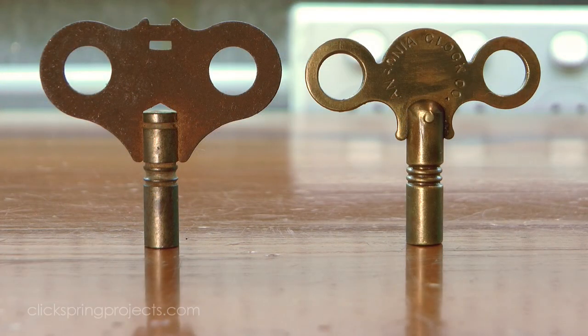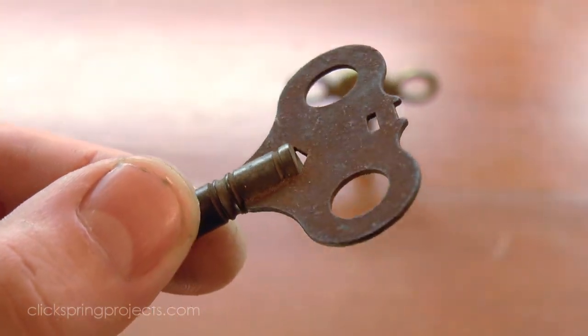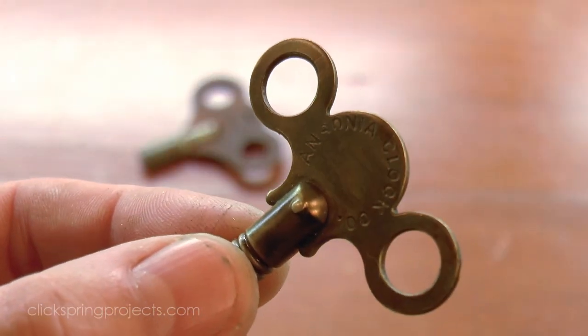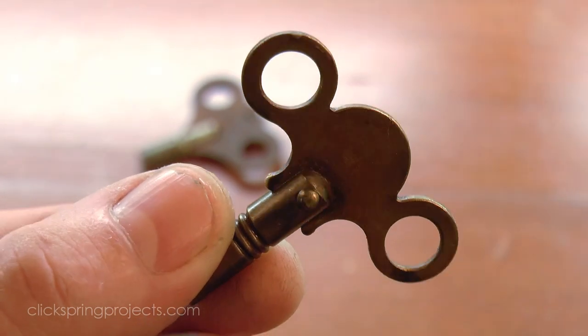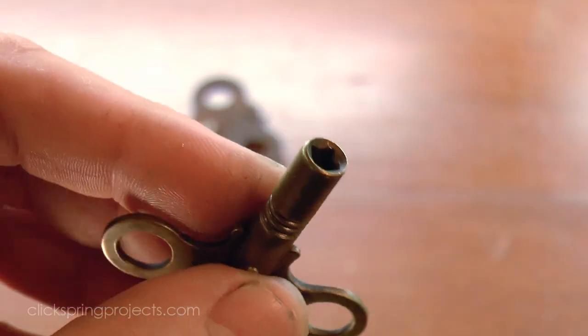These classic old keys have definitely seen better days, but they show all of the main elements required for a simple winding key design. A nice curved profile for the grip, a decent flat area to provide comfortable leverage for the user, and a shaft with a square recess to accept the winding square of the arbor.